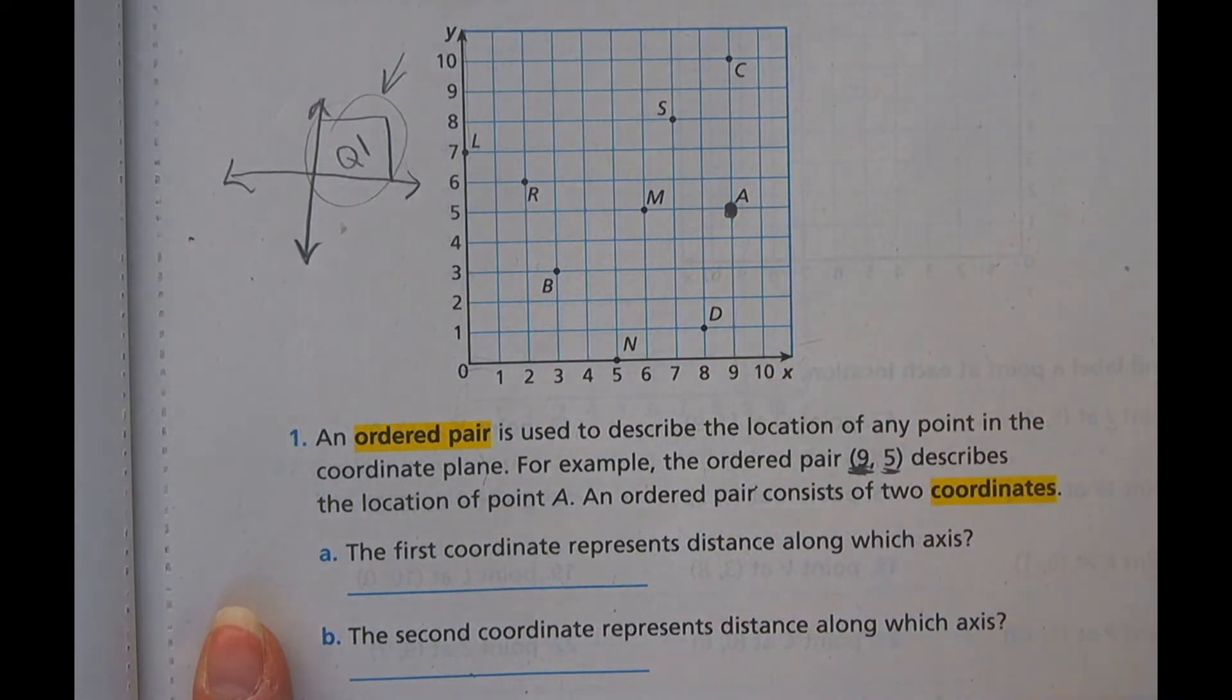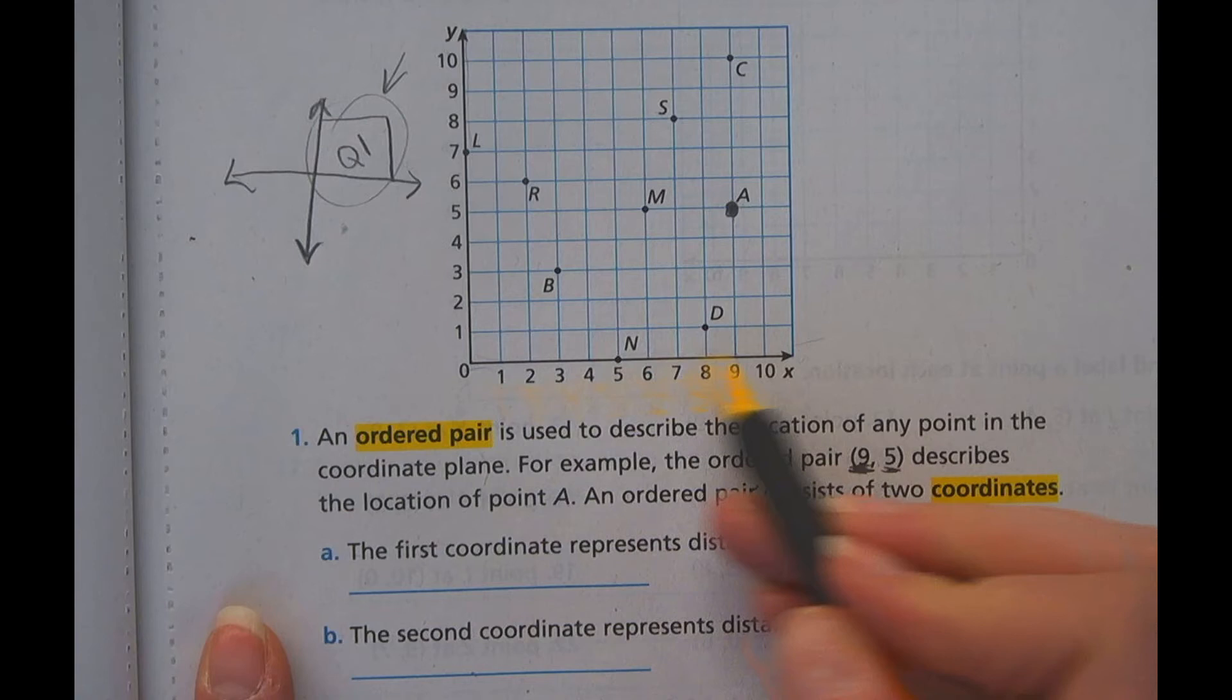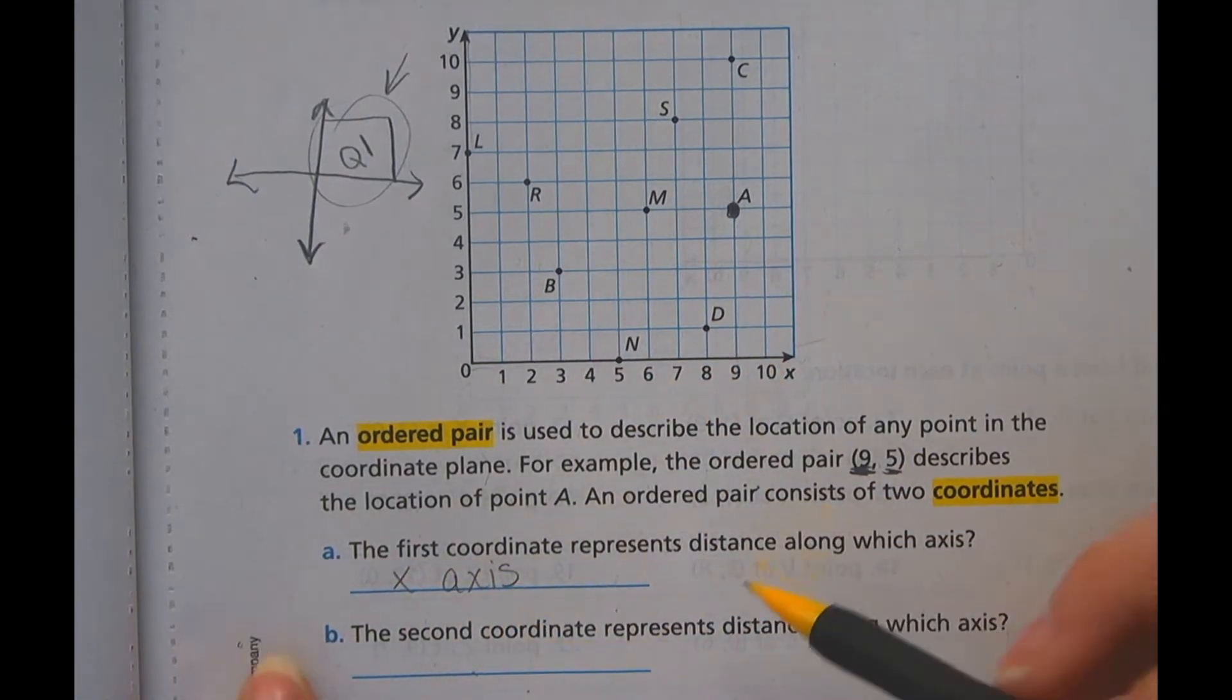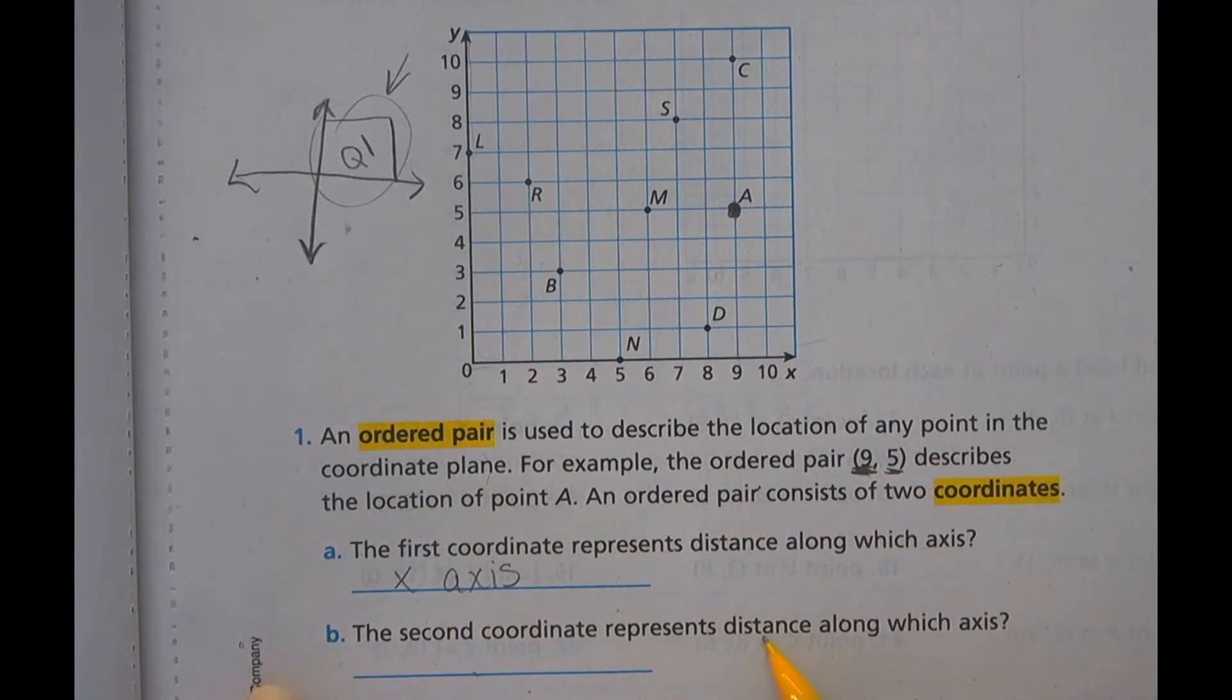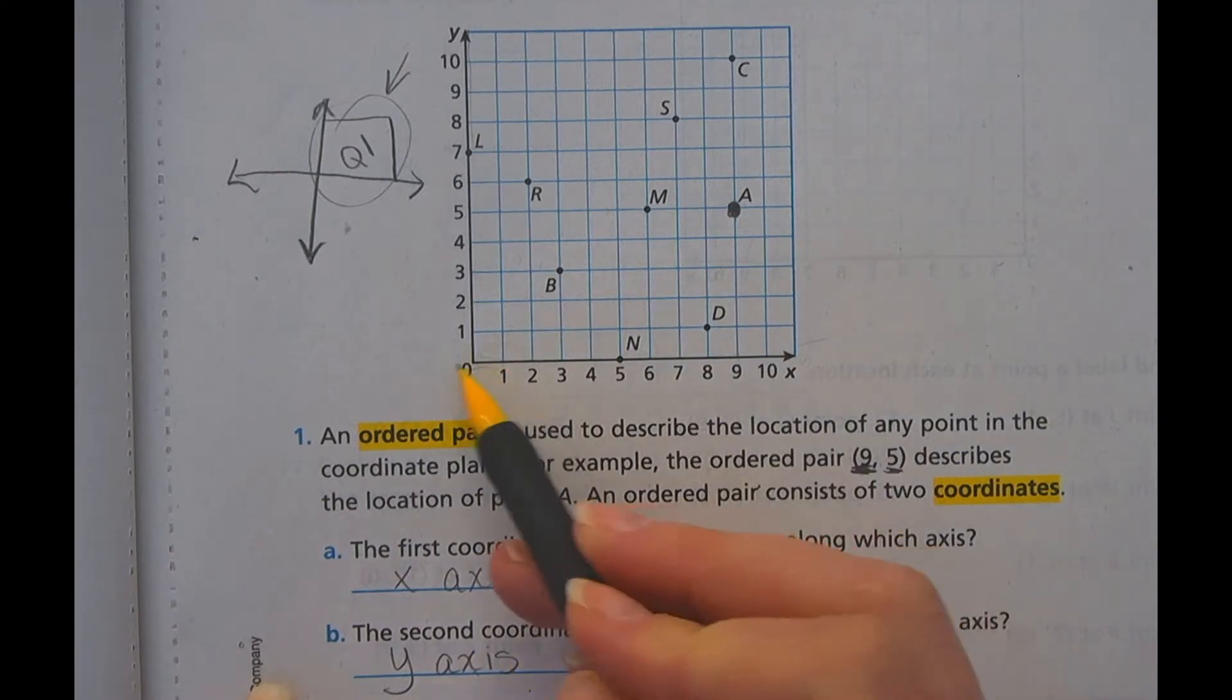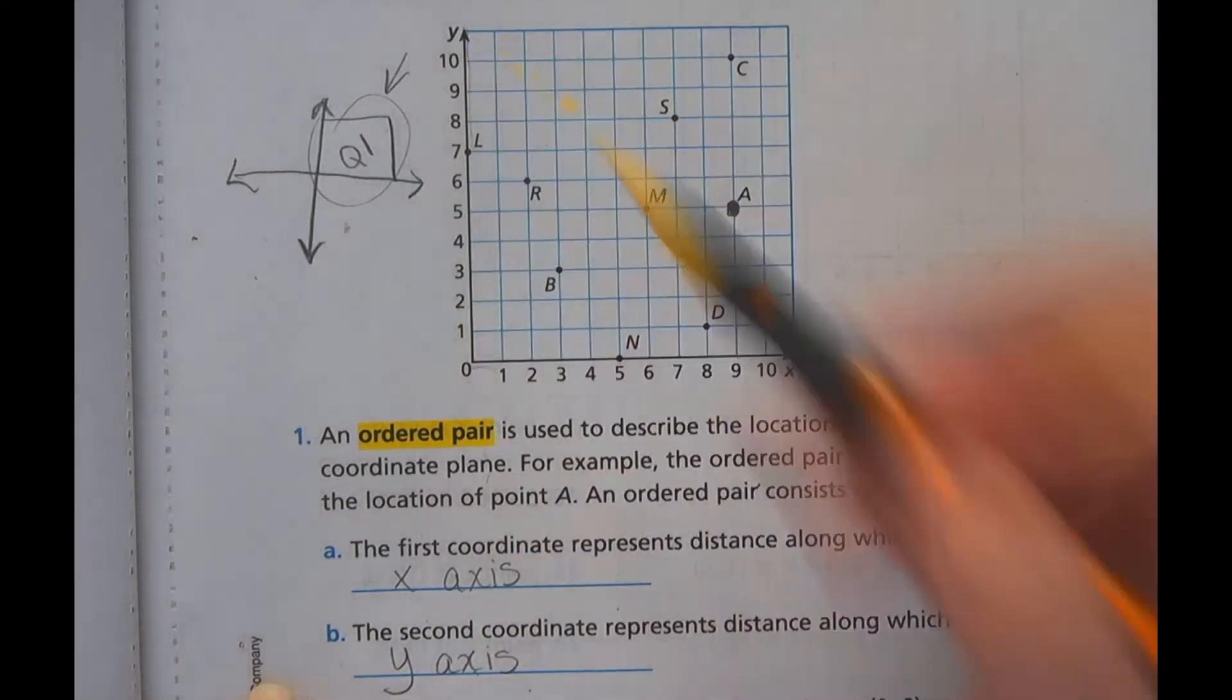The first coordinate represents a distance along which axis? So hopefully you saw going across, it is actually the x-axis. And then the second coordinate represents the distance along which axis? And that time it is the y-axis. So x across, y up.